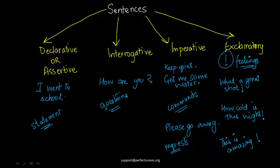So I hope that was very clear. Sentences are groups of words that make complete sense — you should not be left with questions in your mind. There are four kinds of sentences: declarative or assertive ones, which are simple statements; interrogative, which are questions; imperative, which are commands, requests, or orders; and exclamatory, which are written or spoken with a lot of feeling.